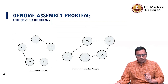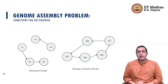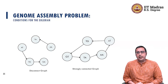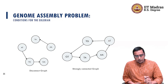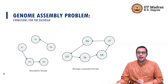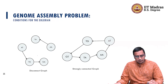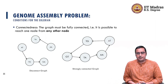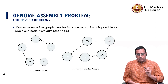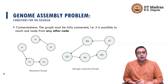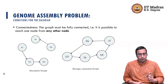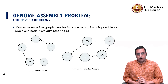It looks very interesting and straightforward. Let us look at those conditions which we have to verify before we actually say that a particular directed graph is an Eulerian graph. We are looking at strongly connected graphs and disconnected graphs. A graph is fully connected if it is possible to reach from one node to any other node.